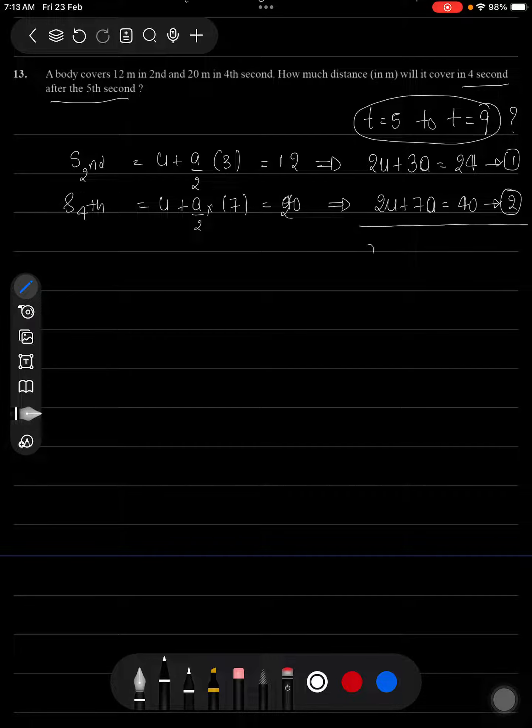On solving these two you will be getting a is equal to 4 meters per second squared and u is equal to 6 meters per second.